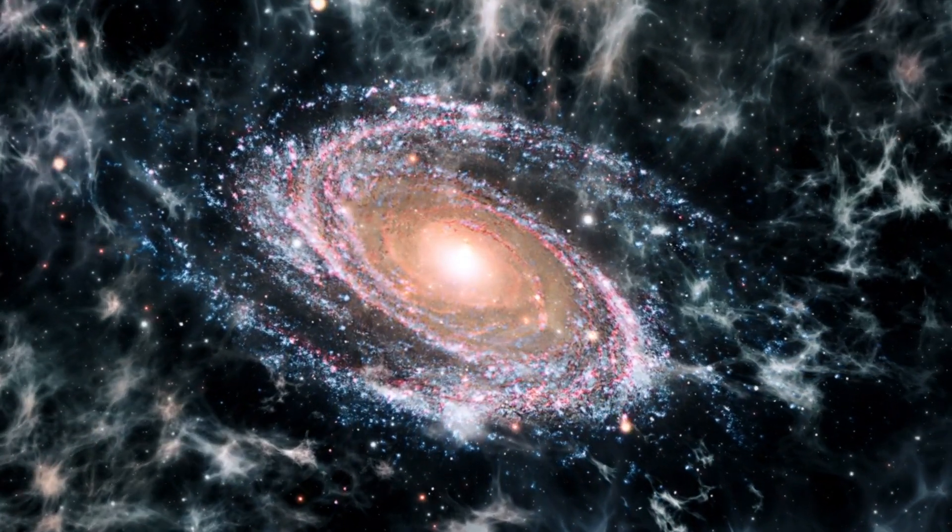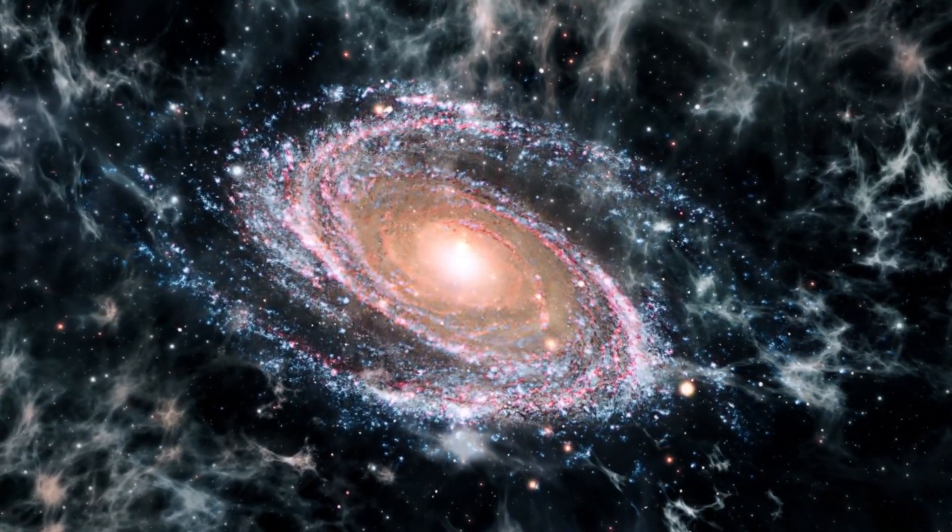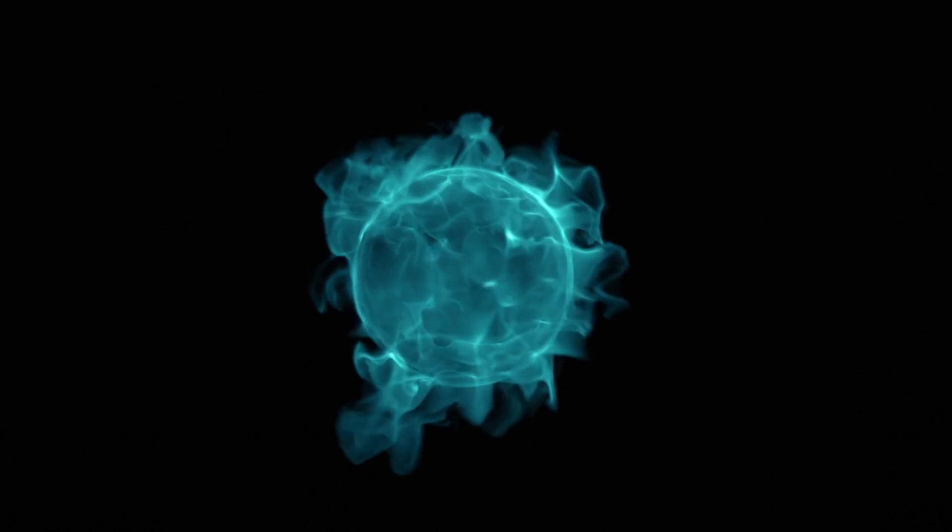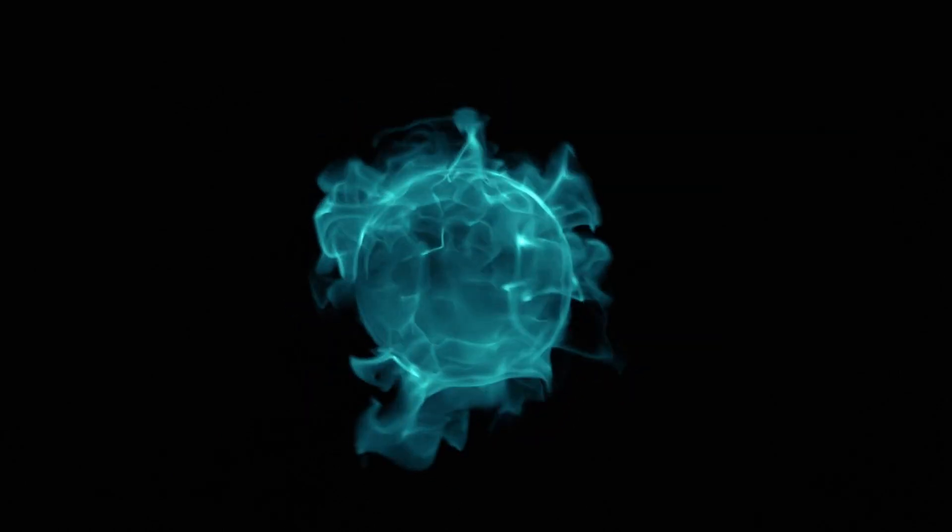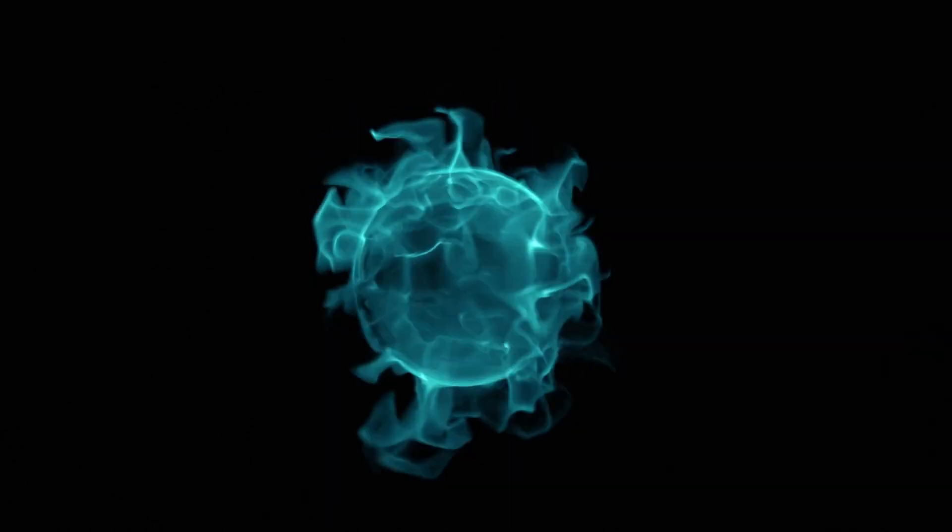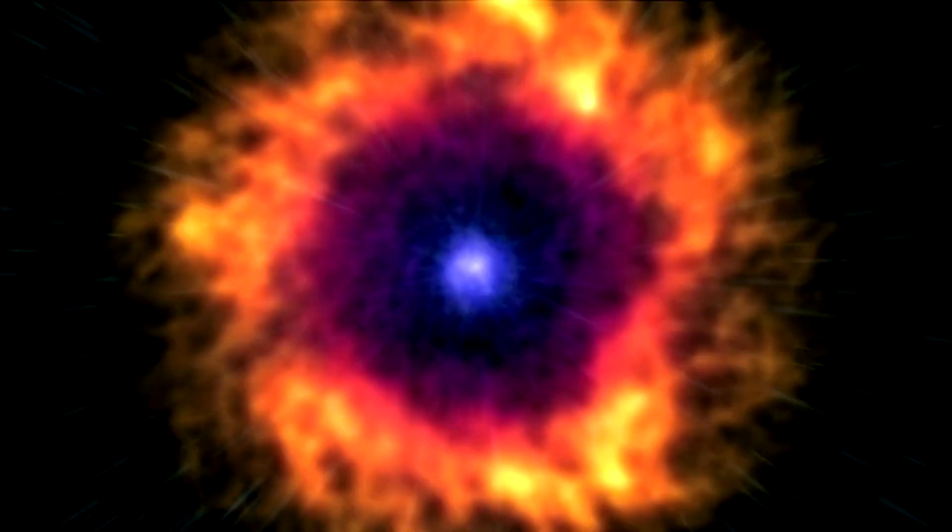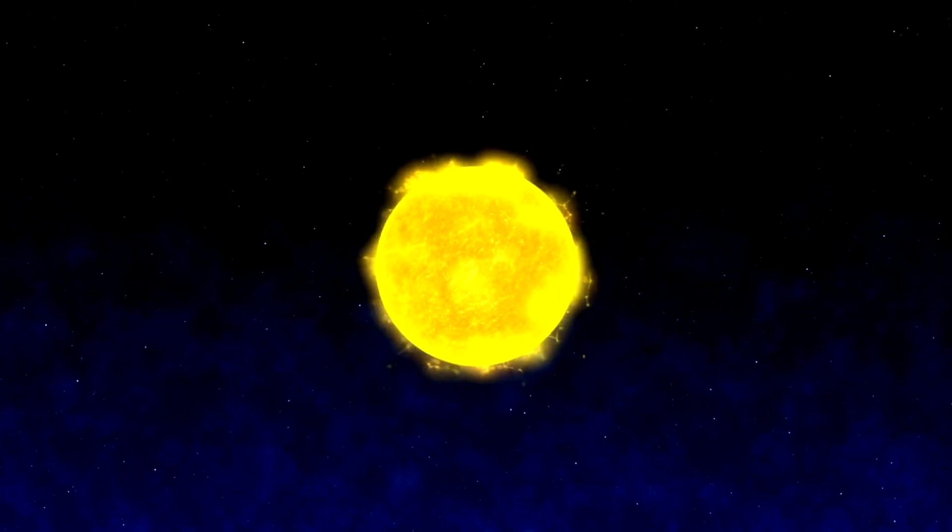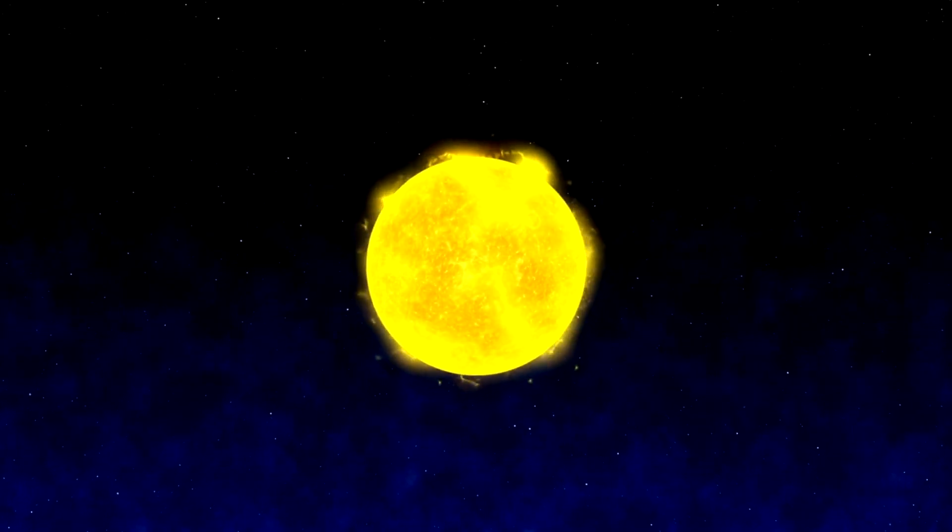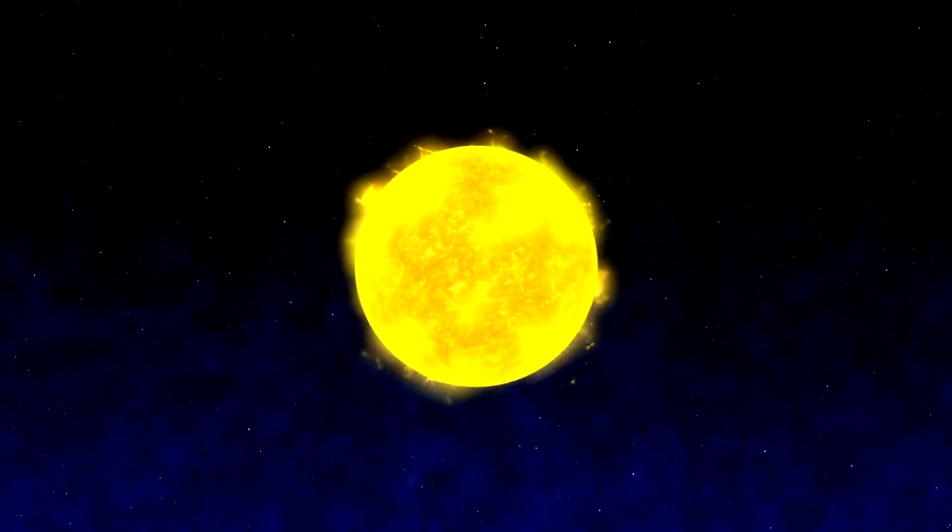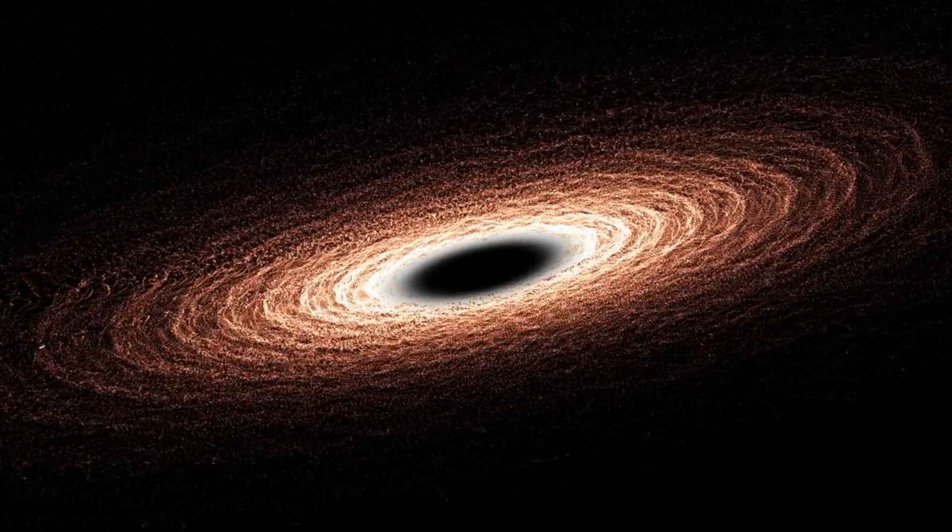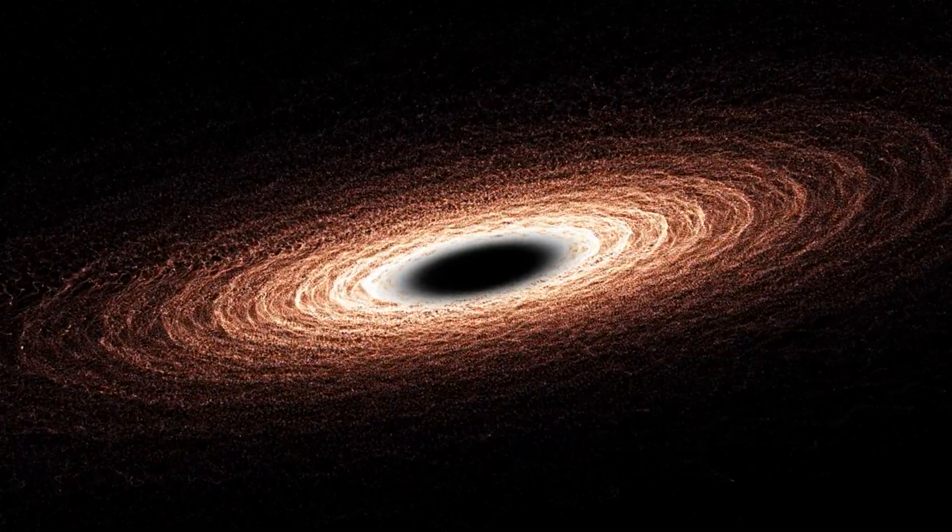It's distinguished by a conspicuous jet of energetic plasma that can be observed from Earth in the radio wavelength, indicating the presence of a powerful central object. M87 is one of the most massive black holes known to us. Precise measurements have been challenging, but estimates suggest its mass is around 6.5 billion times that of our Sun. This is considerably more massive than the black hole at the center of our Milky Way, Sagittarius A.